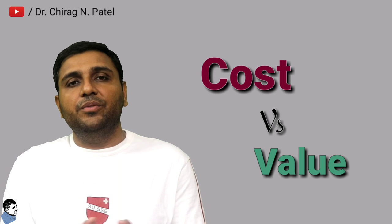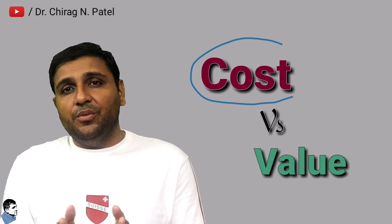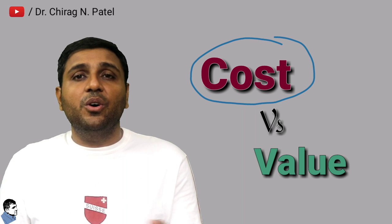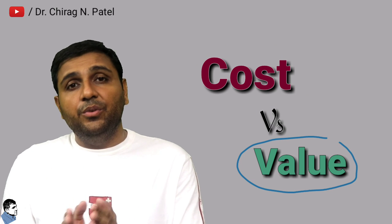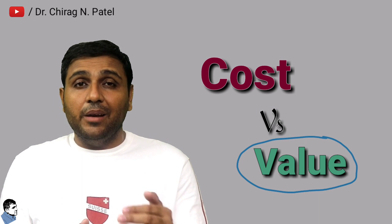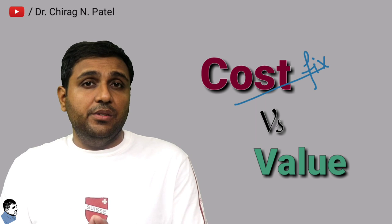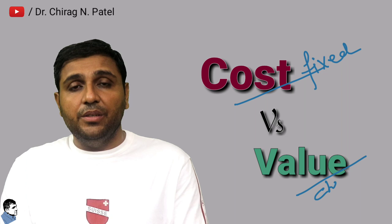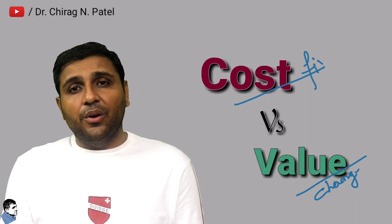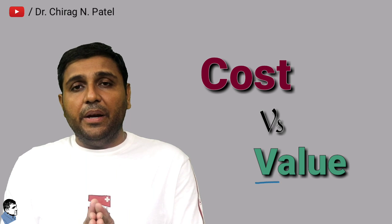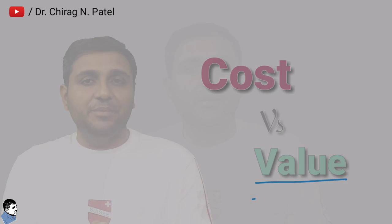Now let's understand the difference between cost and value of a building. Cost of a building refers to the original cost of construction or purchase, whereas value refers to the current sellable value of the structure. The cost is fixed and won't change, but the value may change as per the market — it may go higher or lower than the original cost.